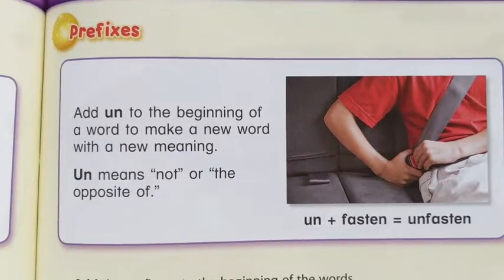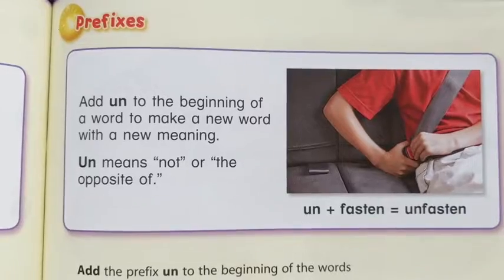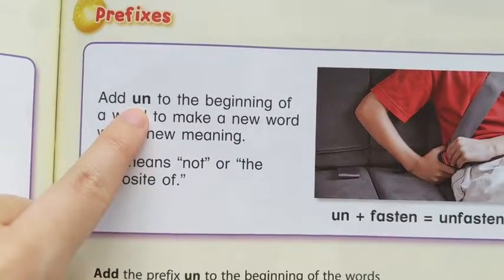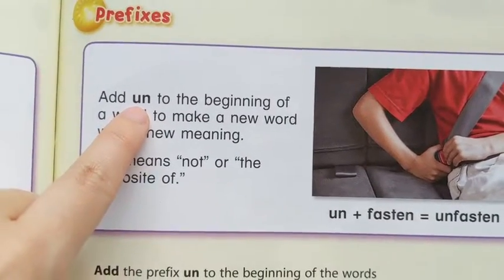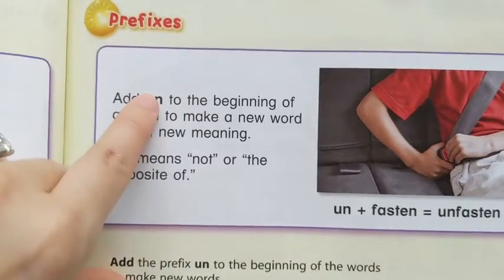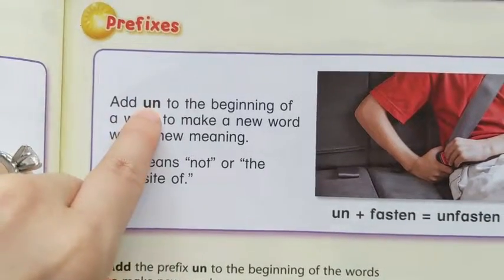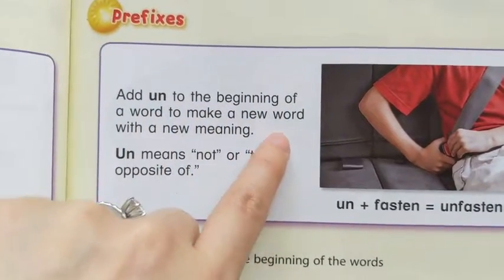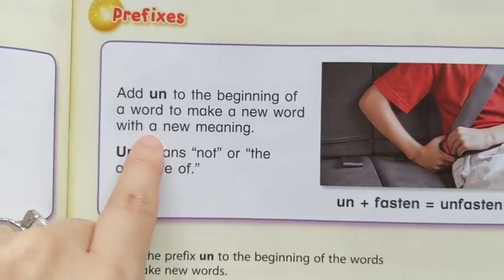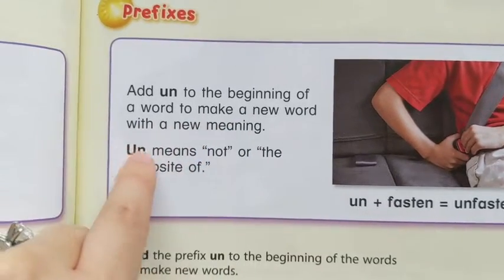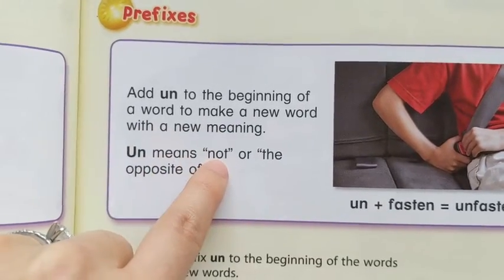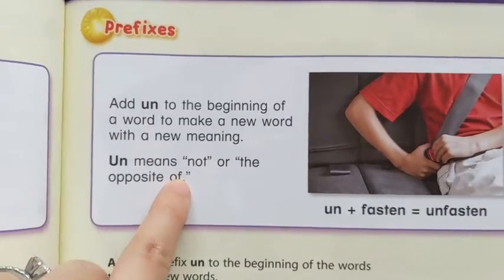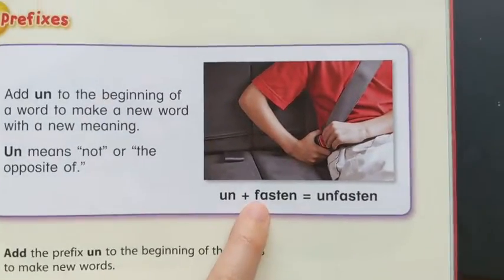On this page, you are simply adding 'un.' That's a prefix. If you add 'un' to the beginning of a word, it makes a new word with a new meaning. 'Un' means 'not' or 'the opposite of.'